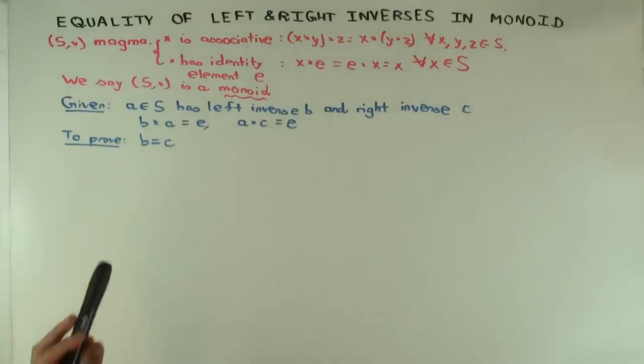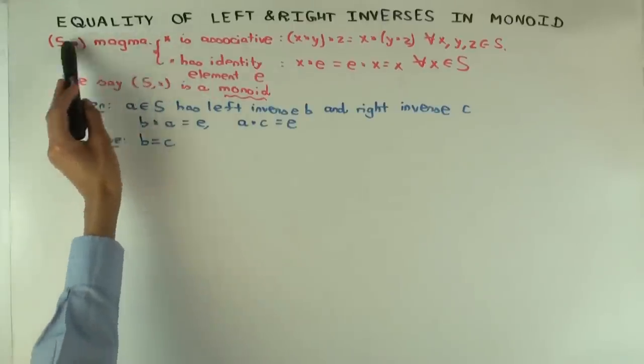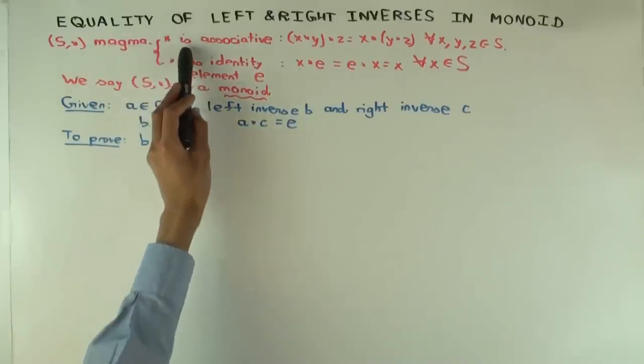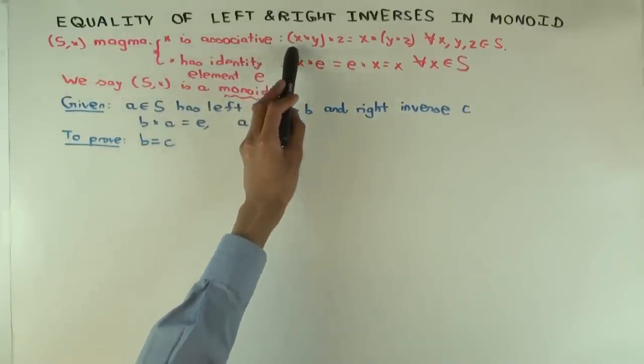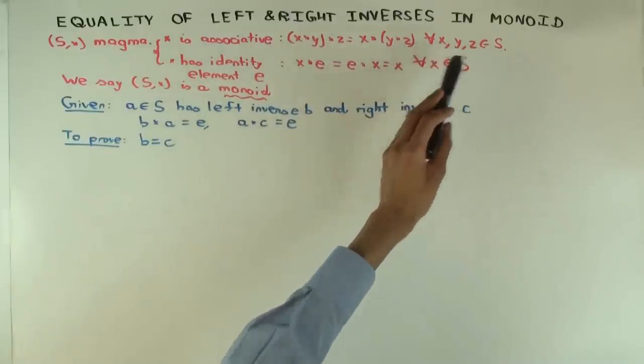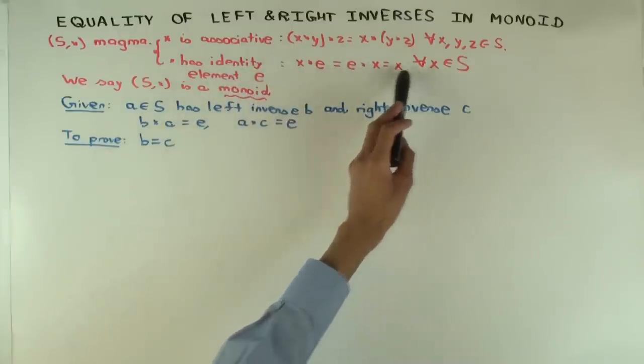So let's say you have what's called a monoid. That's just a set with a binary operation, called a magma. And now if you assume that the binary operation is associative, okay like this, for all inputs, and it has an identity element, that is this.